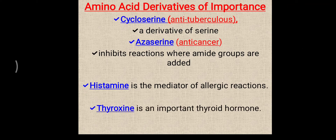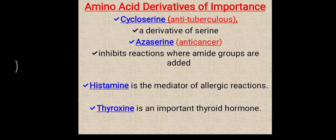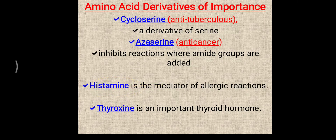One more important derivative is thyroxine, which basically works as a thyroid hormone. Thyroxine is derived from the amino acid tyrosine. So to summarize: from tyrosine, thyroxine is derived; from histidine, histamine is derived; and from serine, azaserine and cycloserine are derived.